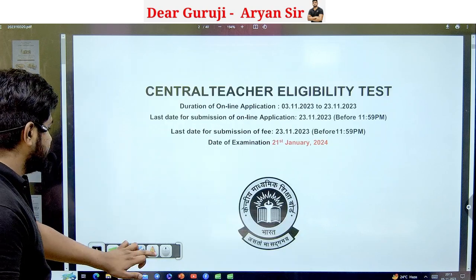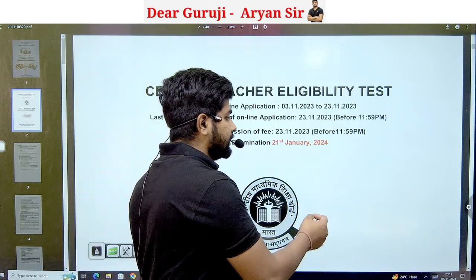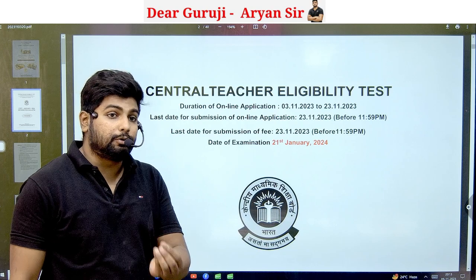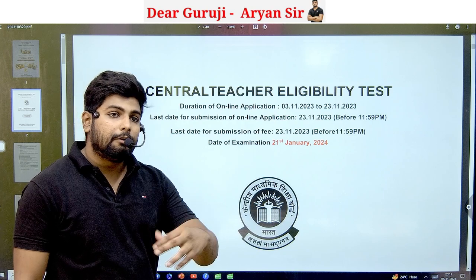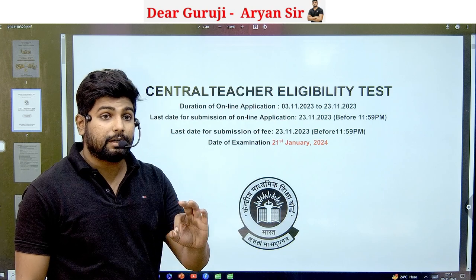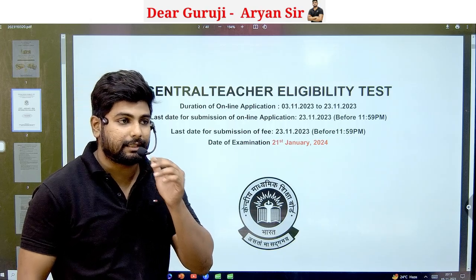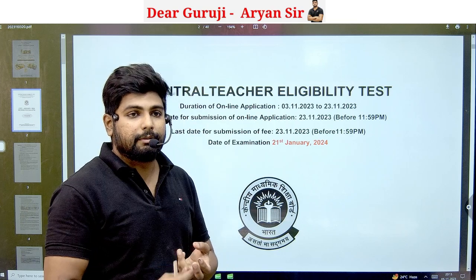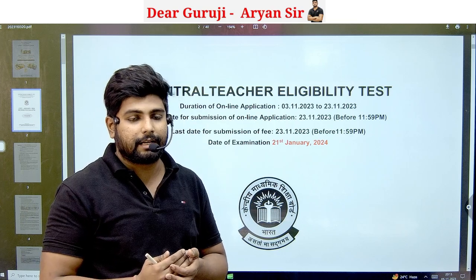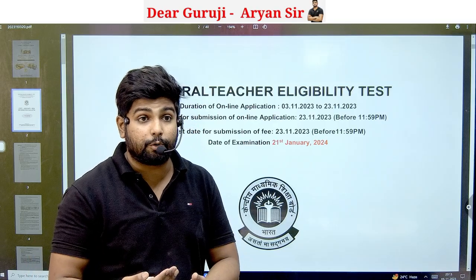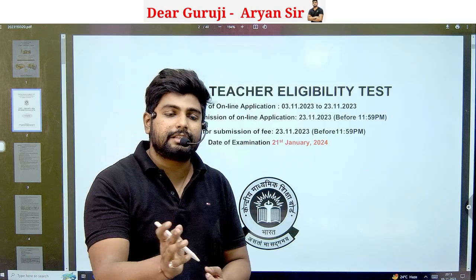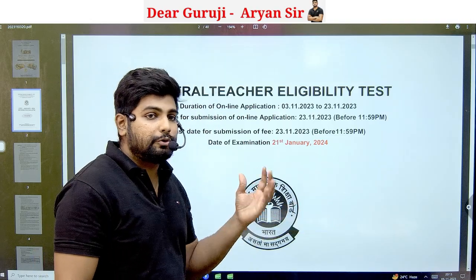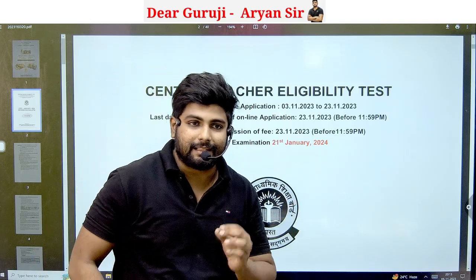Let's talk about eligibility. Paper 1 is for primary level and Paper 2 is for upper primary level. If you are in DLED or BED in your first semester or first year and have already taken admission and started, you are eligible and can fill this form.